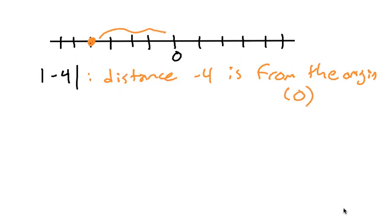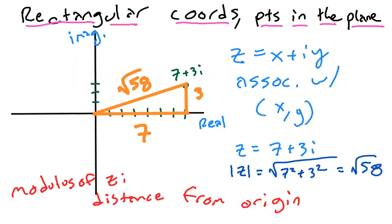This is a geometric interpretation of absolute value. So then it's natural for us that the modulus is kind of a two-dimensional version of that. So it's natural that we're using absolute value bars to denote the modulus of a complex number.